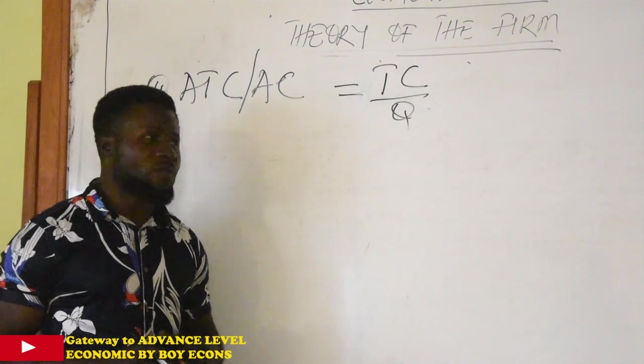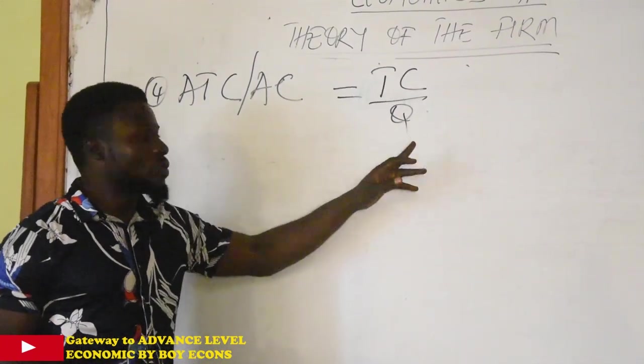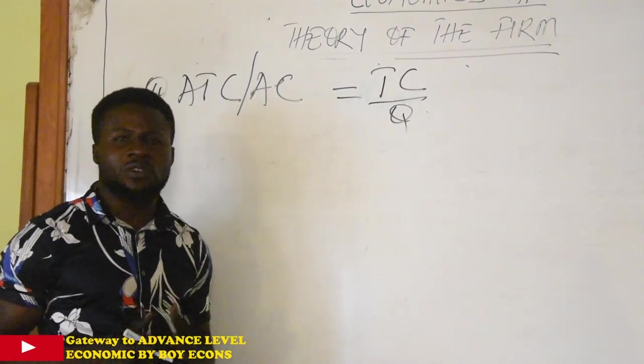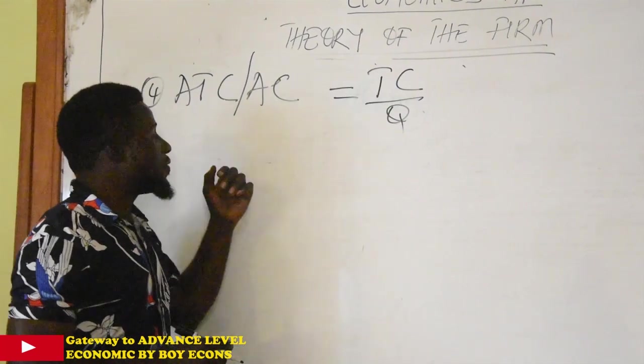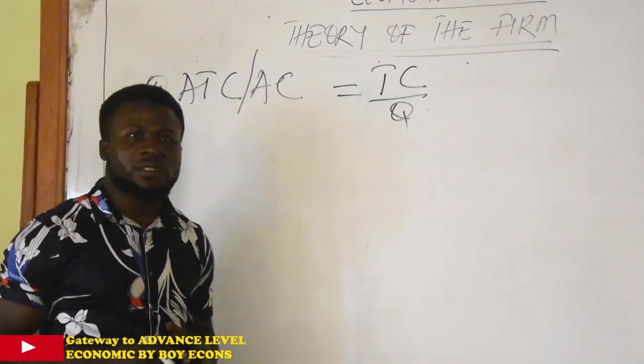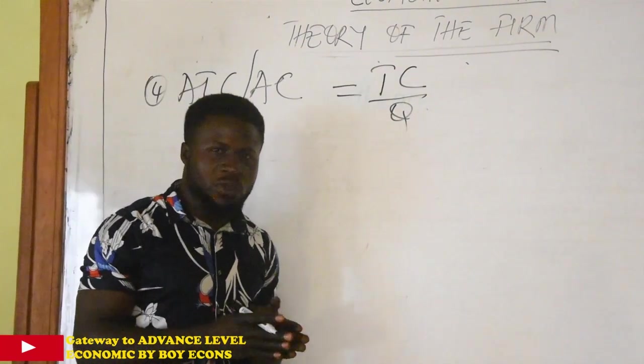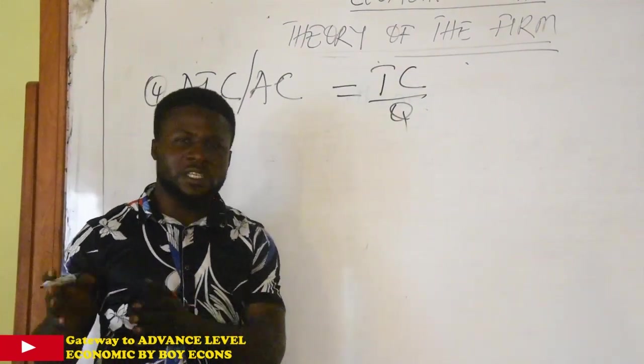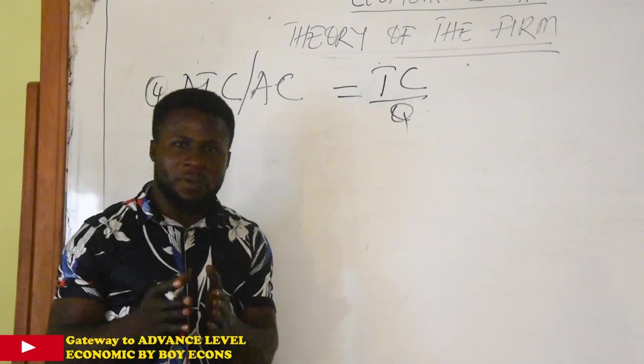But what if you are given averages? If you are not given any total cost, you are not given any output, how do you get to know your average total cost or your average cost? It is very simple. If you are given average variable cost and average fixed cost, you simply add them up.